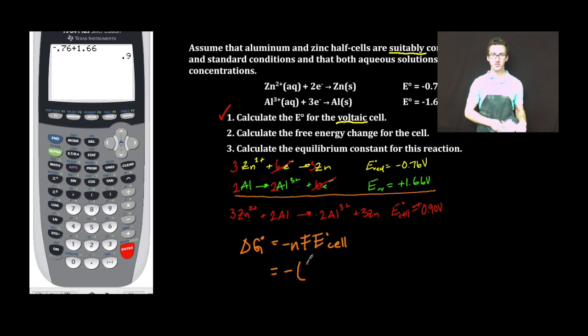Our total number moles of electrons is six moles that were transferred. Faraday's constant 96,500 coulombs per mole times my cell potential positive 0.90 volts, also known as joules per coulomb.